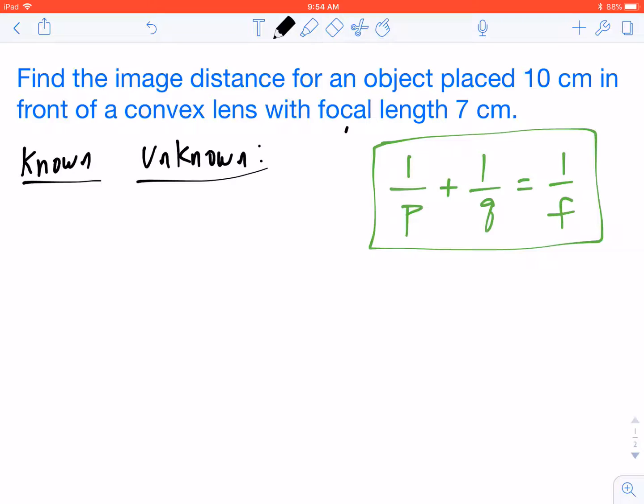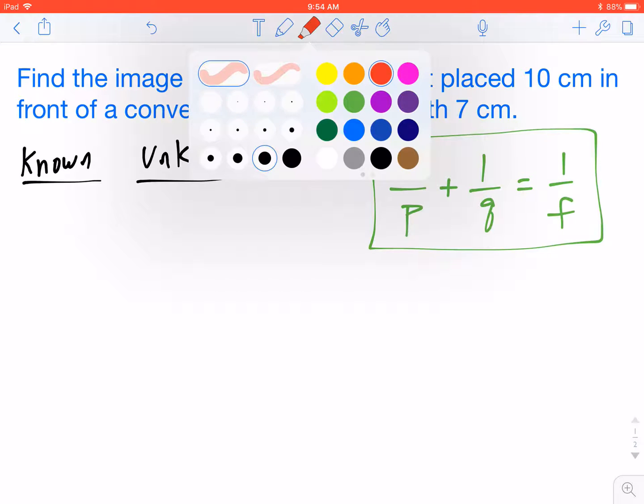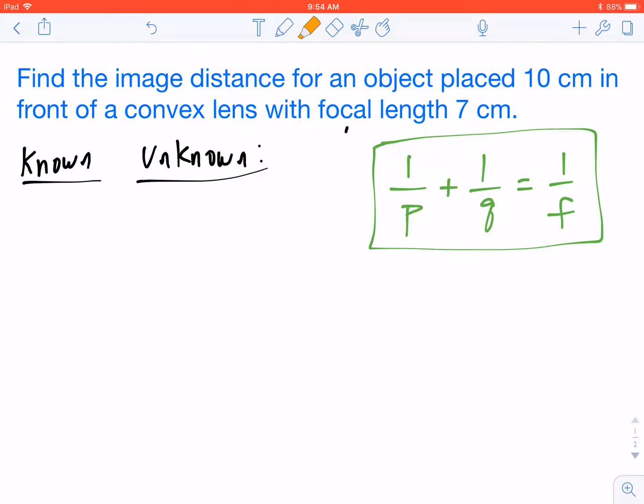So if we take a look at our problem here, we want to find the image distance for an object placed 10 centimeters in front of a convex lens with focal length 7 centimeters. One of the first things that I always teach my students is to locate all of the known information from the problem. So one thing that we know is that our object is placed 10 centimeters in front of a convex lens and our focal length is 7 centimeters.